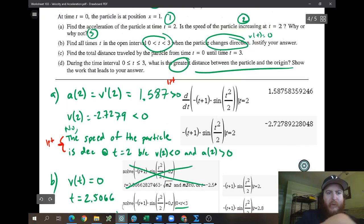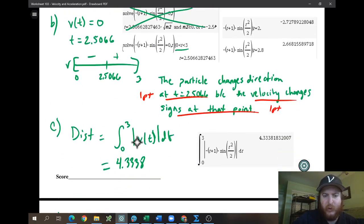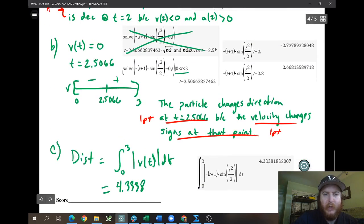All right, part C. Find the total distance. That's just the formula. Whenever we see total distance, we just use our formula. So the formula is the integral from 0 to 3 of the absolute value of V of T dt. And you get 4.3338. Pretty easy.